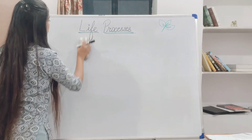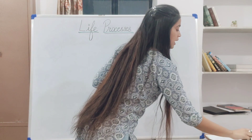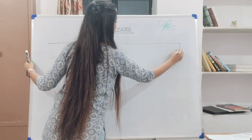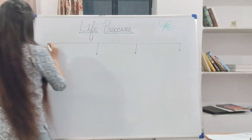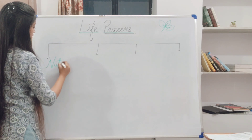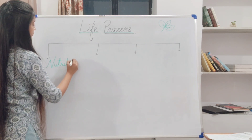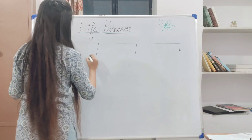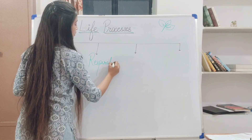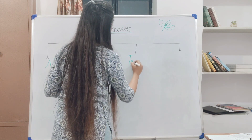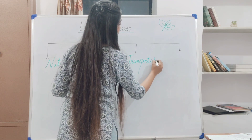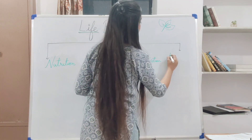We'll study the four most important types in the life process. The first one is nutrition. The second one is respiration. The third one is transportation. And the last, most important one, is excretion.